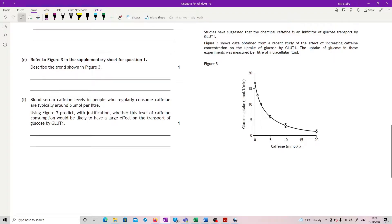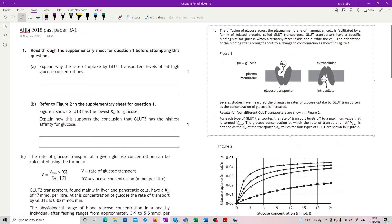Figure 3 shows data obtained from a recent study of the effects of increasing caffeine concentration on the uptake of glucose by GLUT1. The uptake of glucose in these experiments was measured per liter of intracellular fluid. So we've got caffeine in millimoles per liter and then we've got the glucose uptake in micromoles per liter per minute, and a clear trend affected by that.